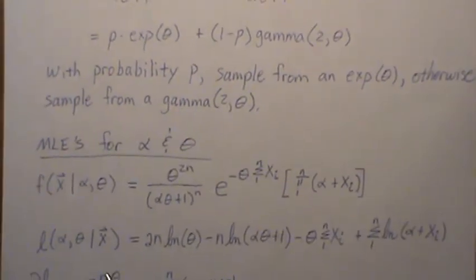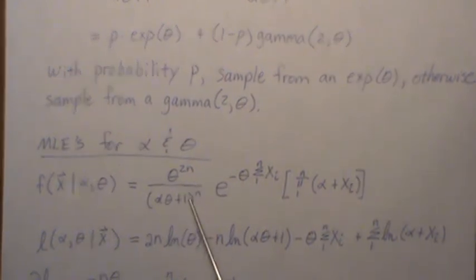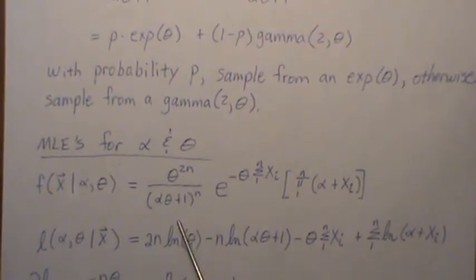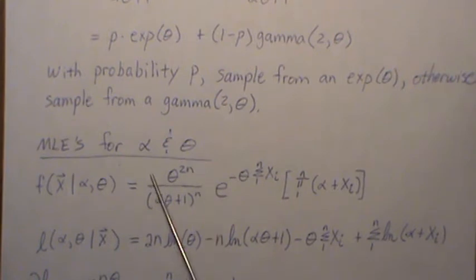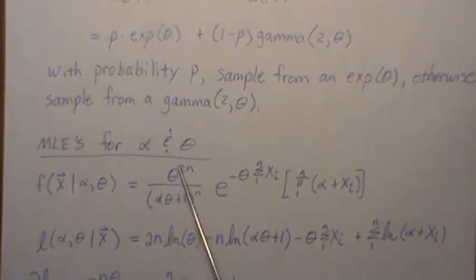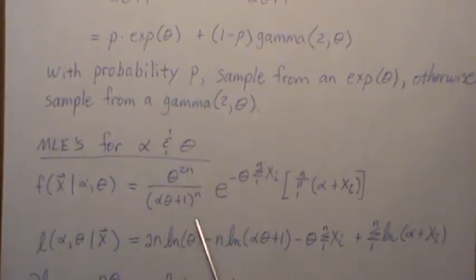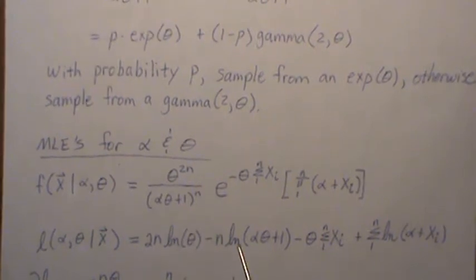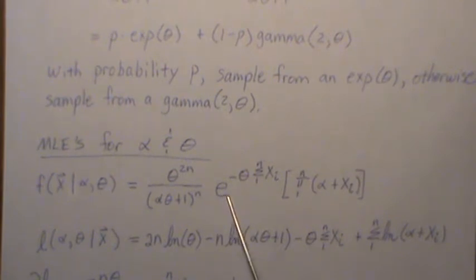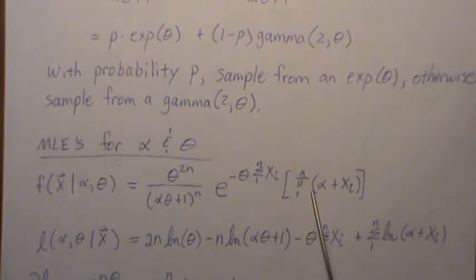Now, we need the log likelihood of this function. The two can come out front of the log, and then since that's division, it's minus, and then that can come out front of the log. The e and the natural log cancel, and we're just left with the exponent. Here, the log of a product is the sum of the logs, which is what this is.